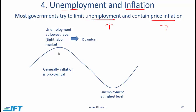At a high level, we need to understand the relationship between the business cycle and these variables. Unemployment is at its lowest level when we are at the peak of our business cycle, as we've discussed earlier. When we have very low unemployment, this is also called a tight labor market. We need to recognize that a tight labor market might trigger a downturn in the economy.